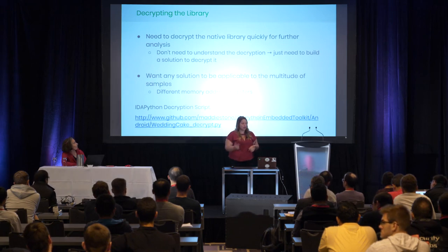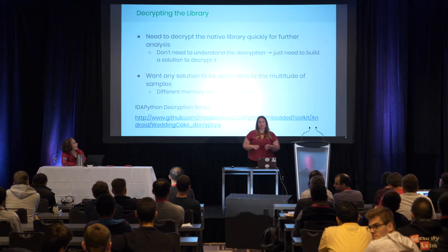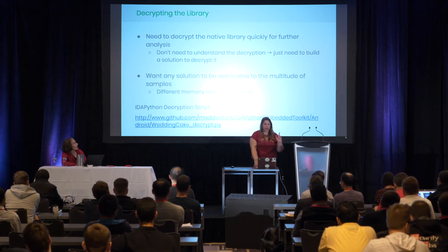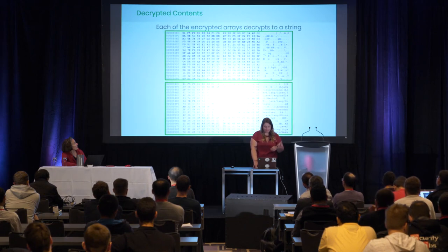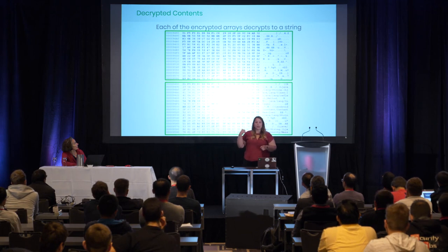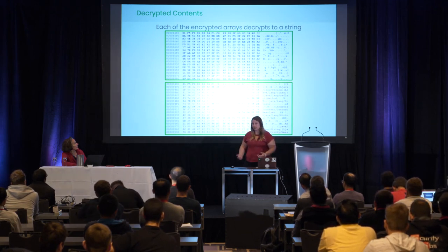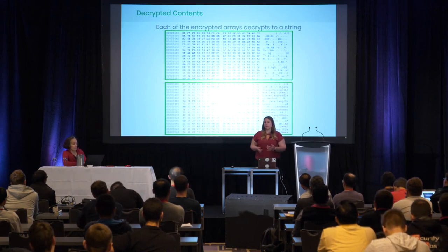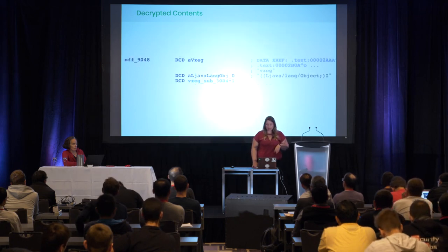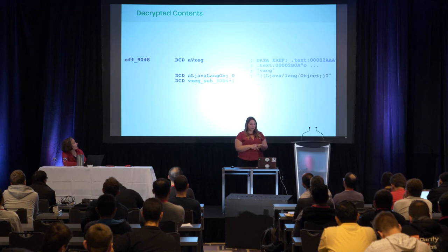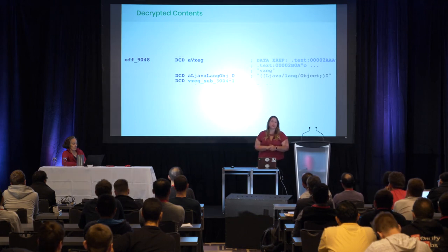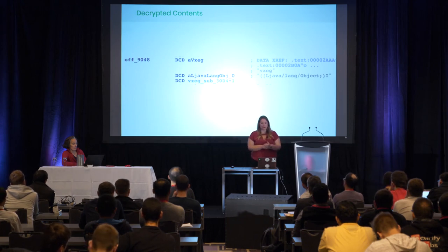Now I'm ready to understand what this decryption algorithm's doing — or more importantly, I don't necessarily need to understand it; I just need to see what this ELF looks like when it's decrypted in memory. I chose to use an IDA Python script, which is open source and available in my IDA Python embedded toolkit repo. When I run this script over my IDA database of the library, what previously looked like random encrypted bytes now shows me all the missing strings. We can clearly see all the signatures we needed, a structure that points to the string of our method name vxcg, a pointer to the string of the signature for that Java declared method, and then the pointer to the function where that code is actually implemented.